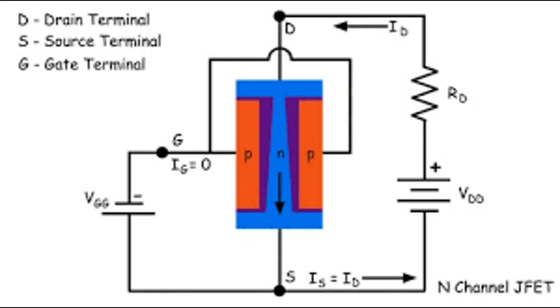the two PN junctions at the sides establish depletion layers. The electrons flow from source to drain through the channel between the depletion layers. The width of these depletion layers determines the width of the channel and hence the current conduction through the bar.